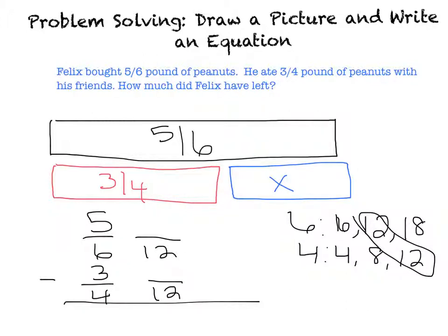Now we do the same thing. 4 times what equals 12? Well, that's 3. So we're going to multiply. Then we go 3 times 3 and that equals 9. And now 6 times what equals 12? Well, I know that's 6 times 2 equals 12. So 5 times 2 is 10.